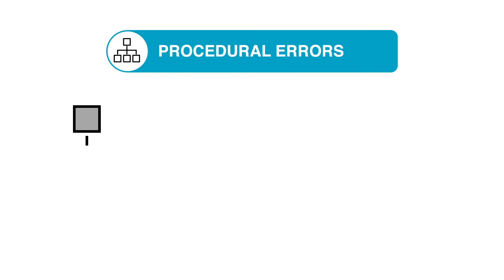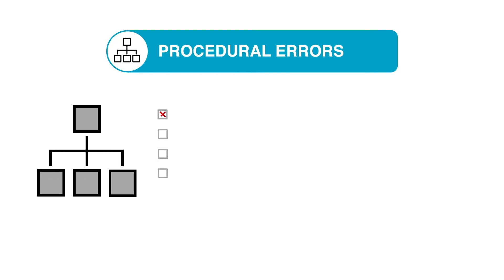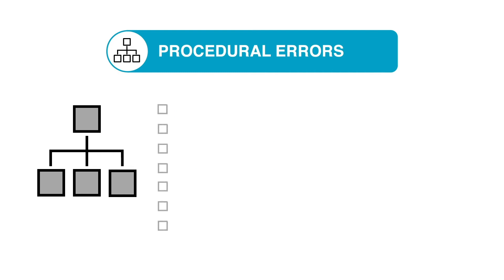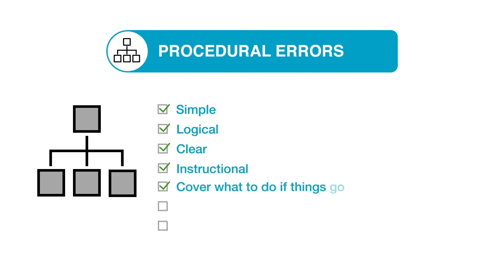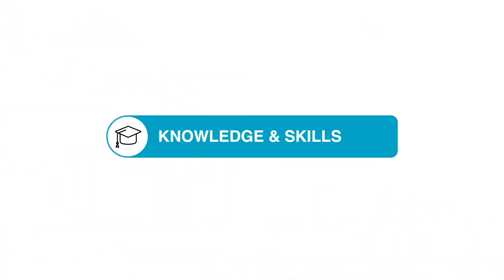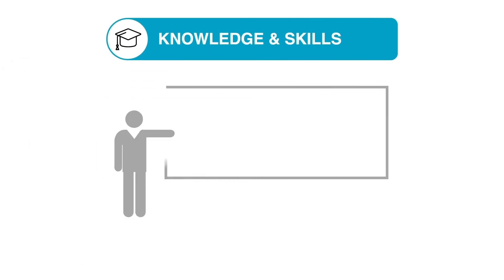Procedural errors: many incidents appear to result from failure to follow correct procedures, inadequate processes, omitting steps, or the wrong procedure being performed. Standard operating procedures should be simple, logical, clear, and instructional; cover what to do if things go wrong; be available to staff when needed; and be followed correctly.